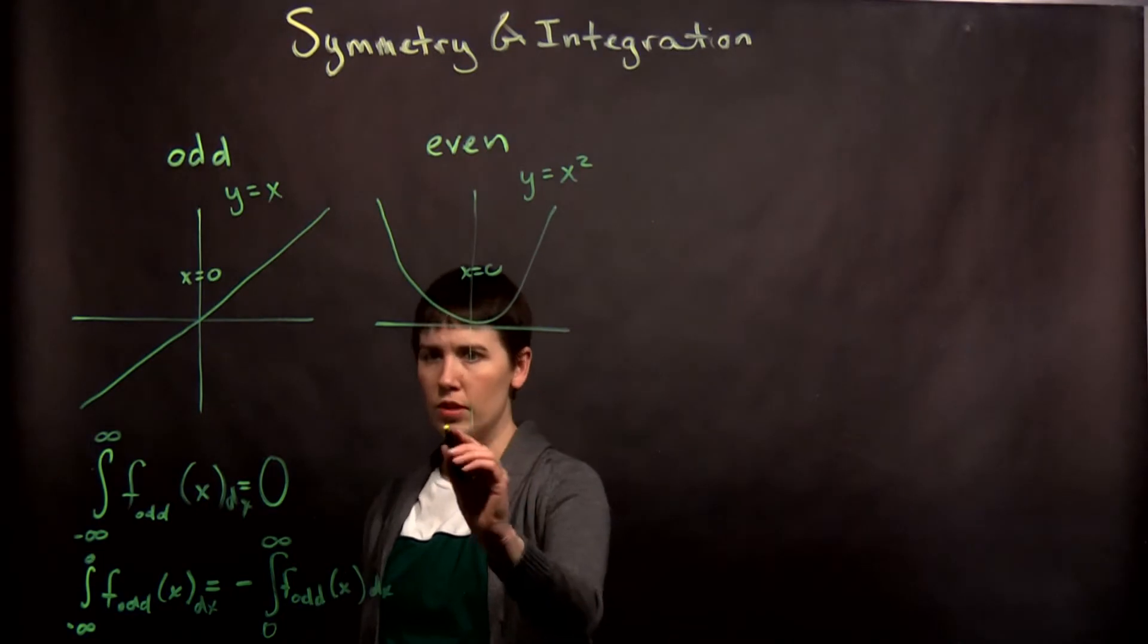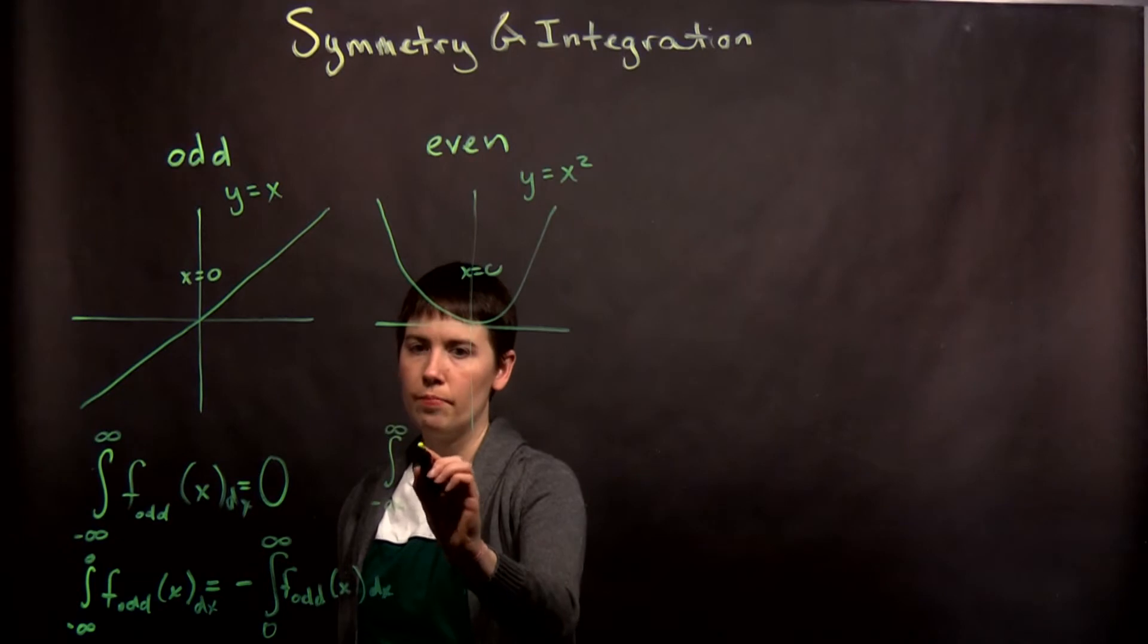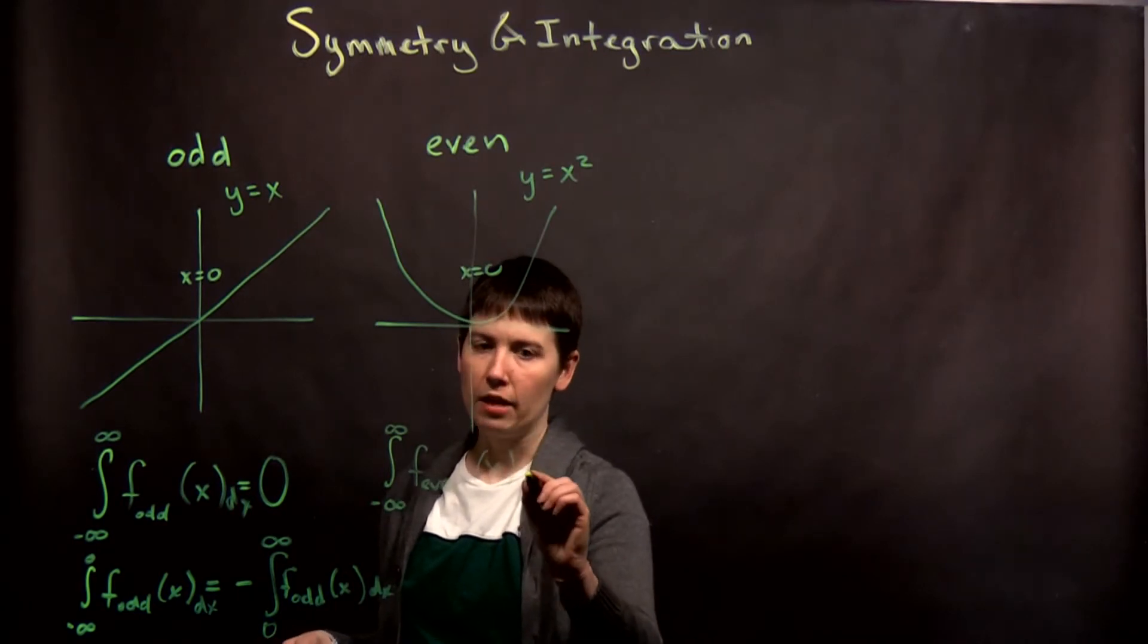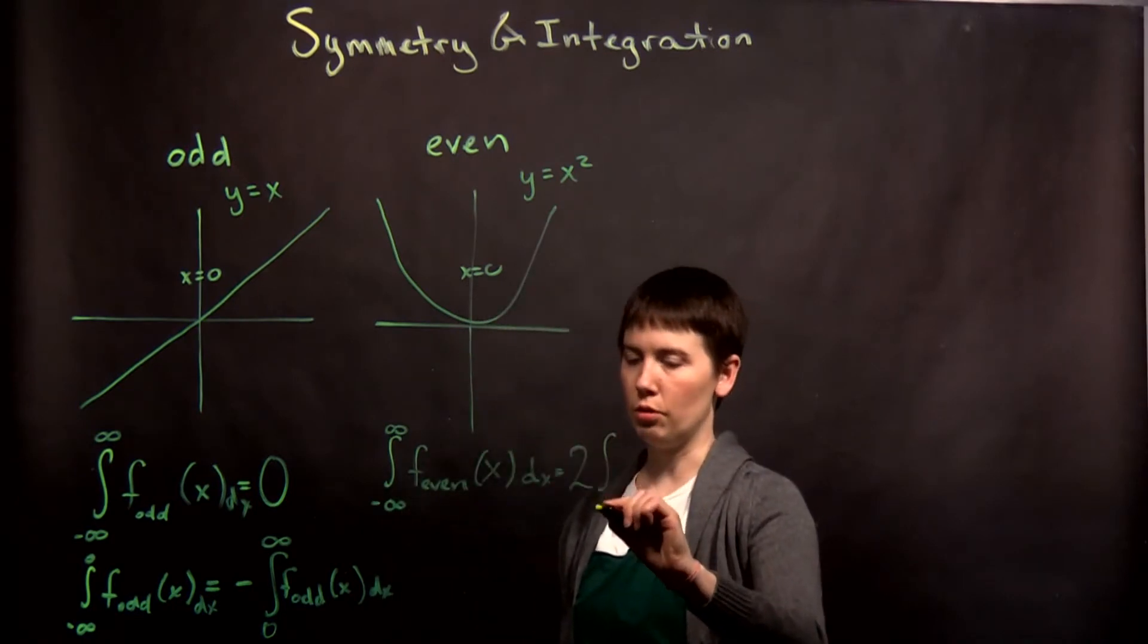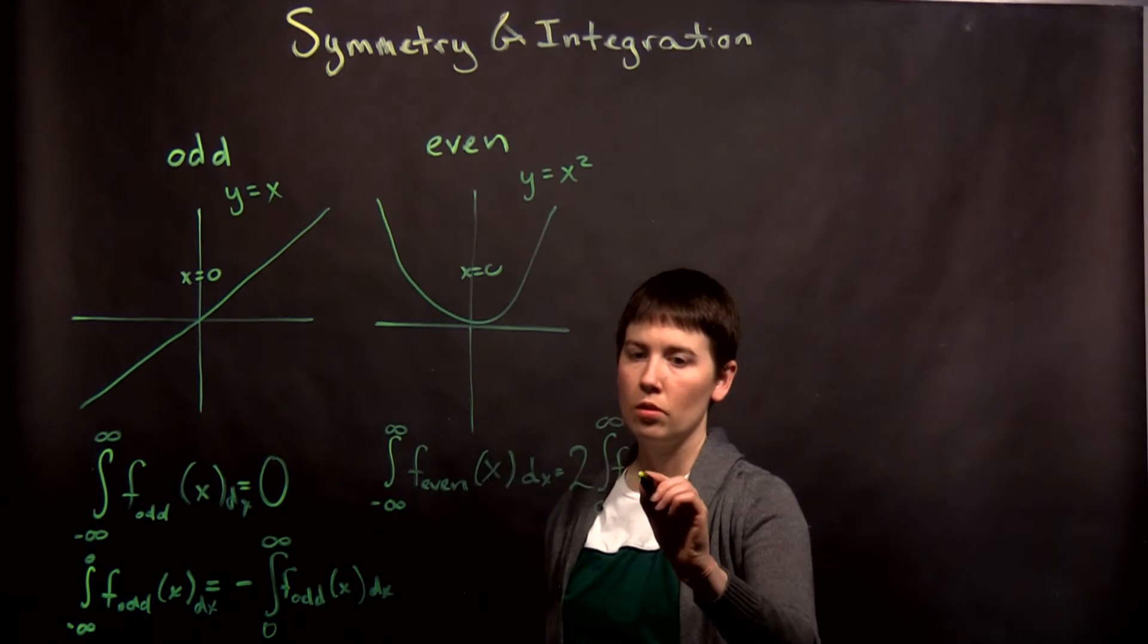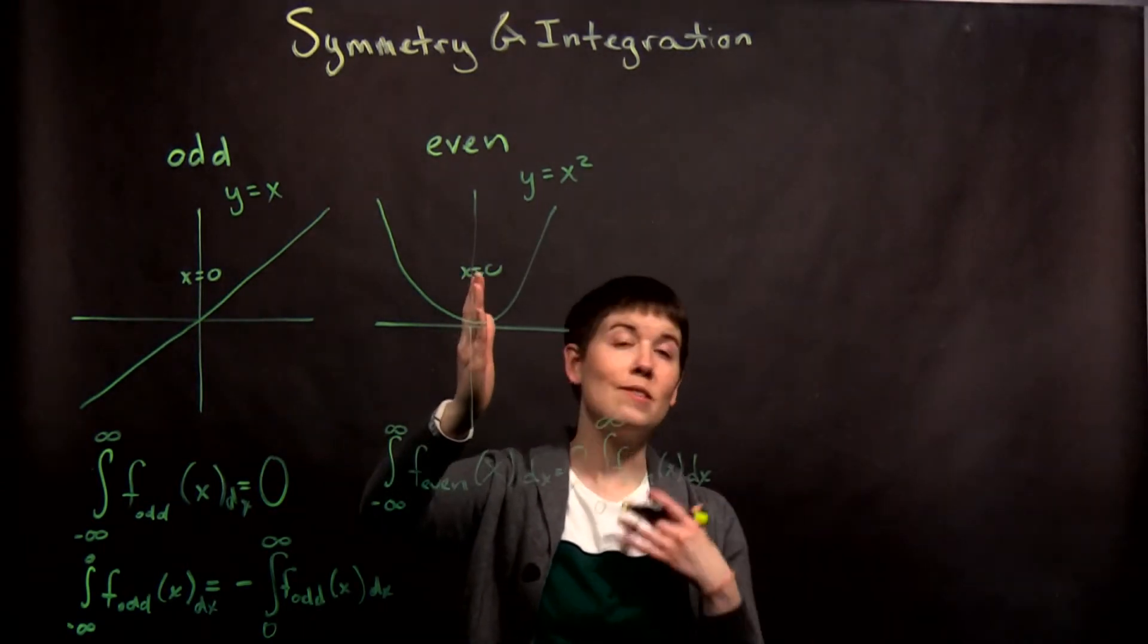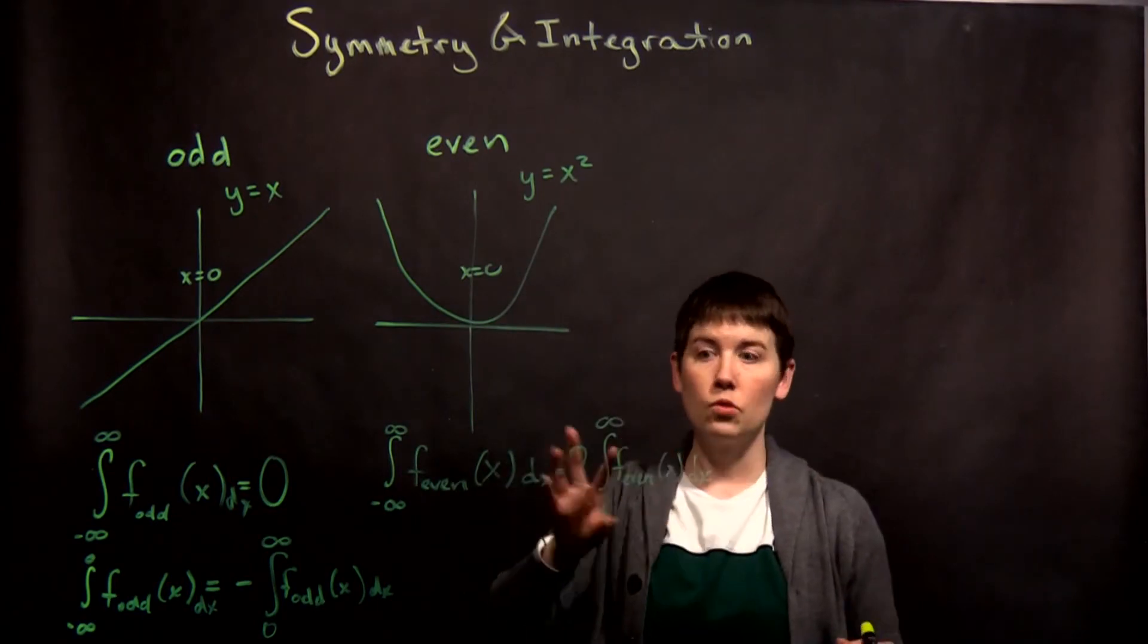So now if we look at our even, it works a little bit differently. And this identity may or may not be helpful. So if we have an even function that we integrate from negative infinity to infinity, this is in fact going to be equal to twice the integral from zero to infinity of f even. And the reason for that will be that our integral from negative infinity to zero is the same as our integral from zero to positive infinity. So it's twice that.